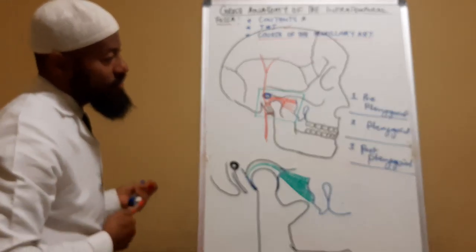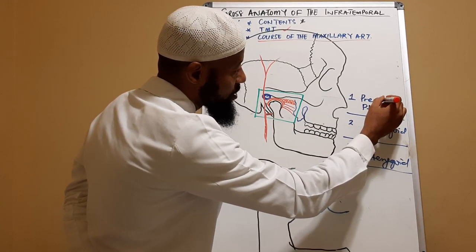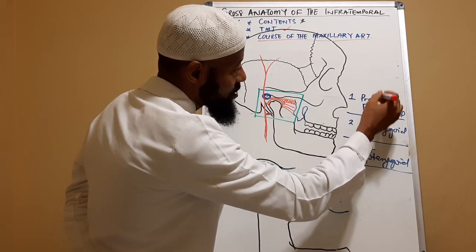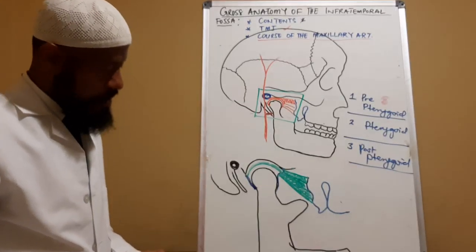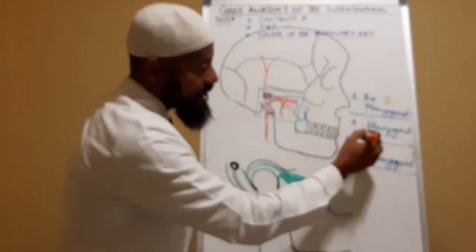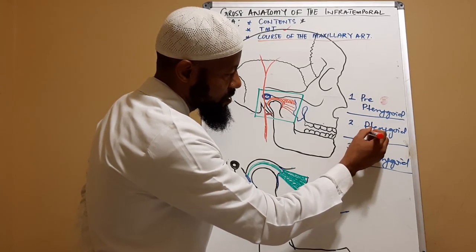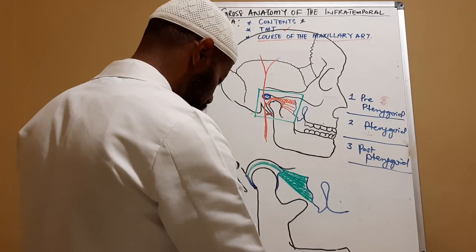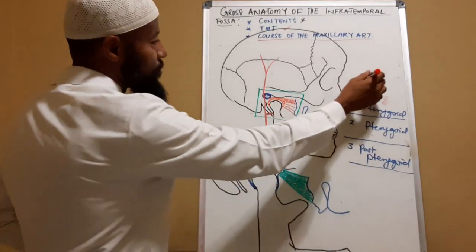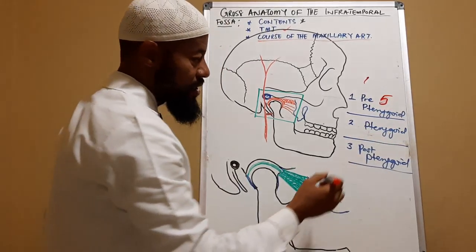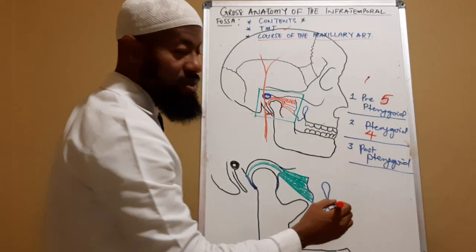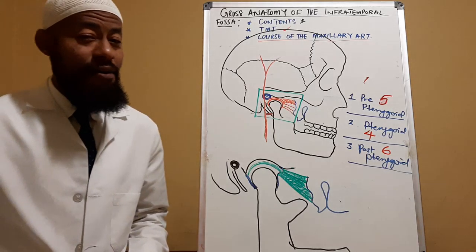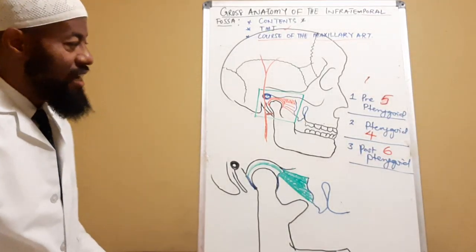It is important to note that the first part gives five branches, the second part gives four branches, and the third part gives six branches. Together, we have 15 branches that run in this region. That's a lot of vascularity in that region, which is why it's important.